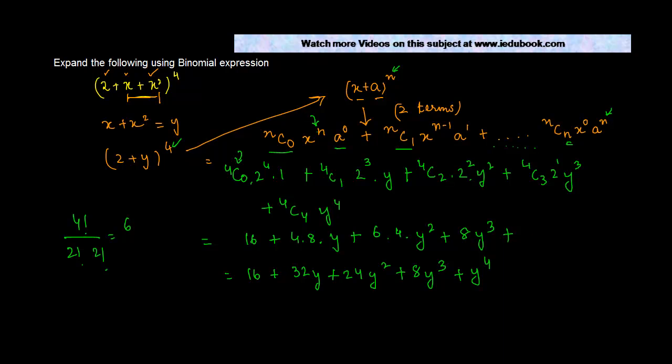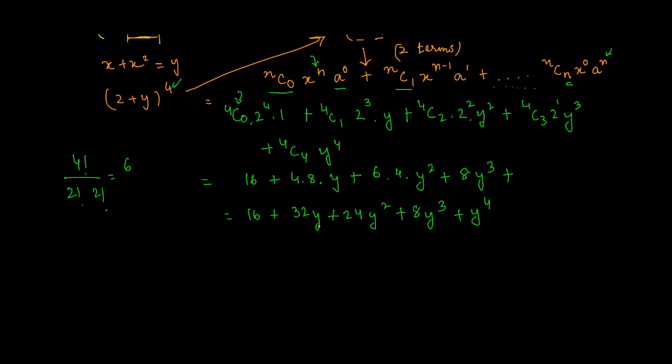Now we can substitute the value of y which was x + x² in this equation, so we get 16 + 32(x + x²) + 24(x + x²)² + 8(x + x²)³ + (x + x²)⁴.